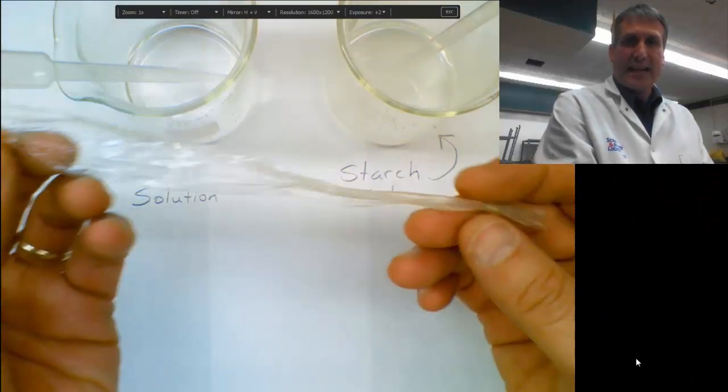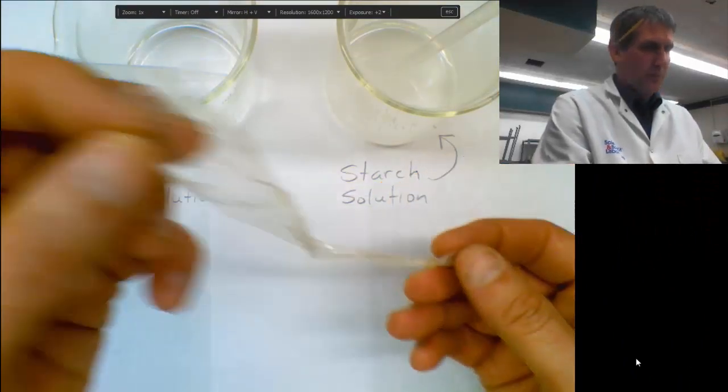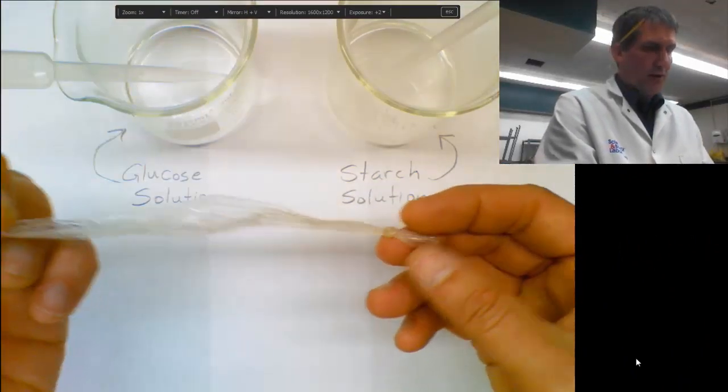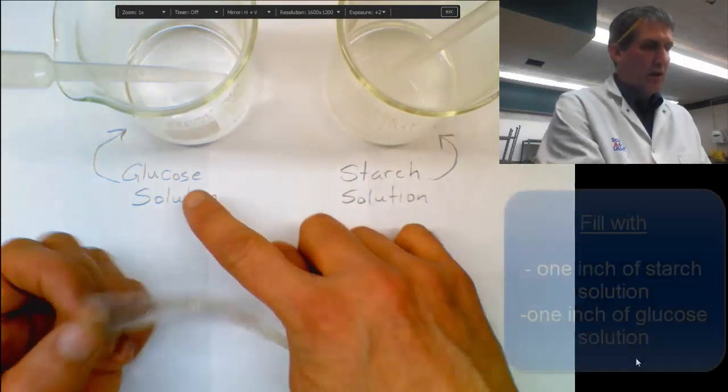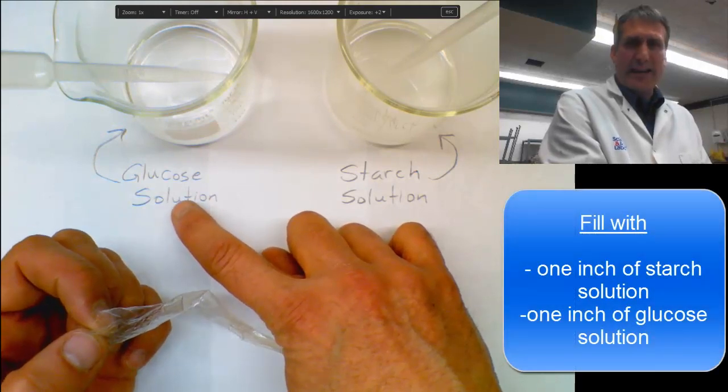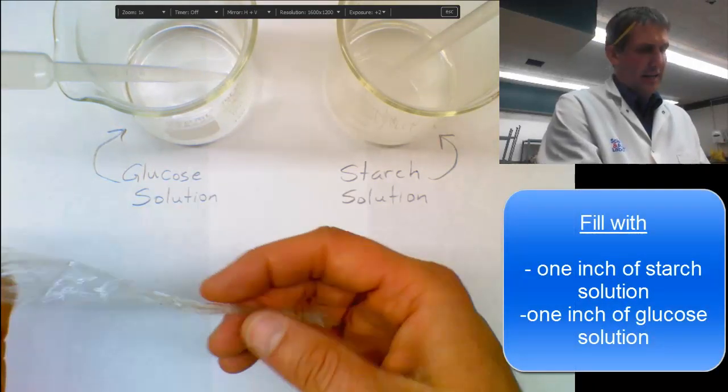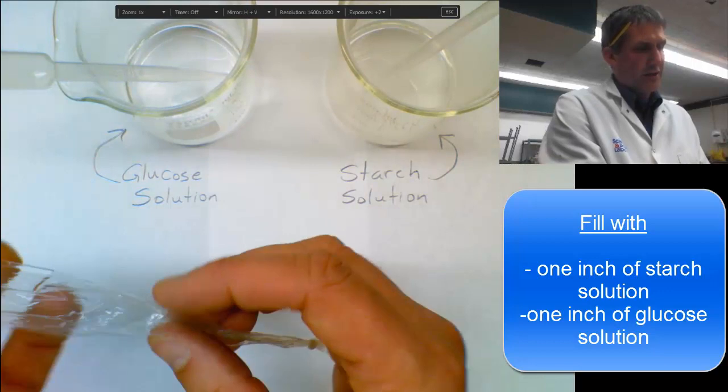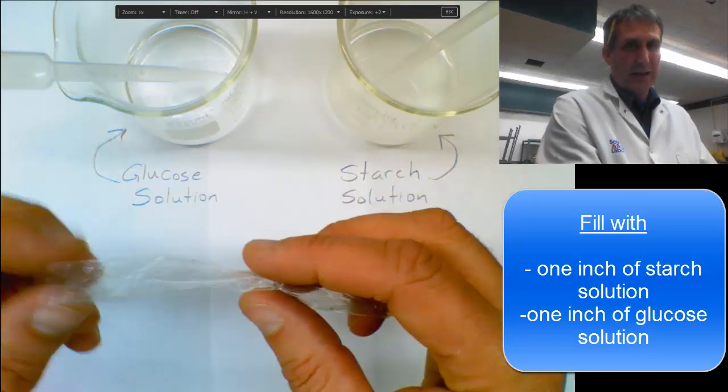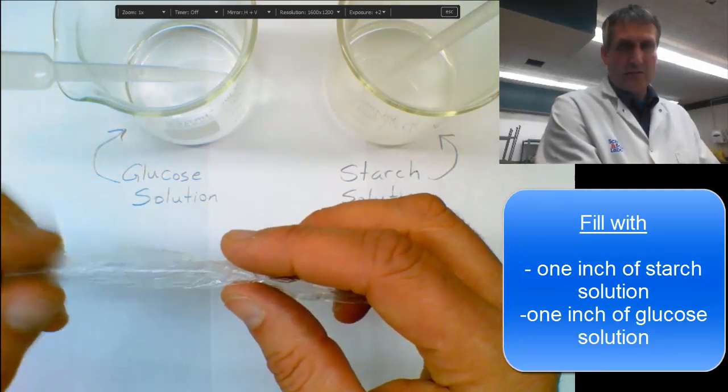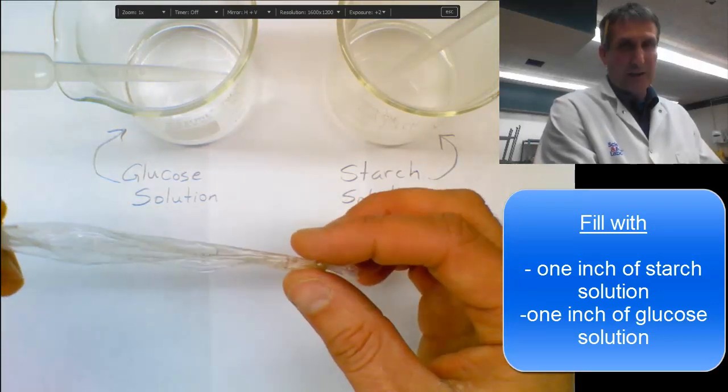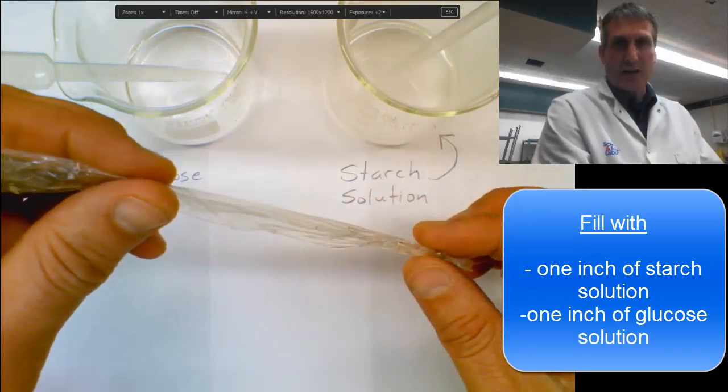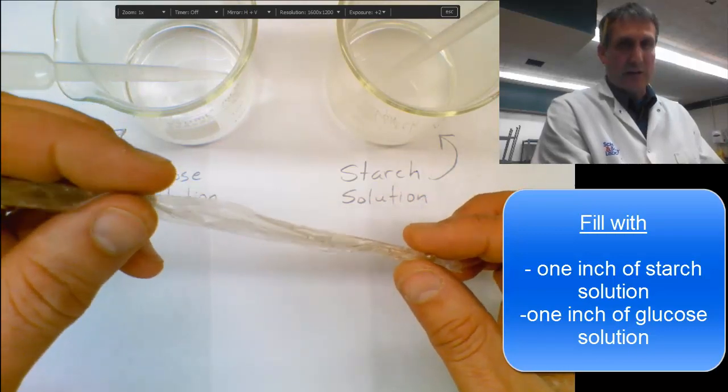So in this next part, we have our dialysis tubing. We've put it under the water and we've tied off one end and we have one end open. Now we're going to fill about an inch of glucose solution in here and an inch of starch solution. And you want to leave a good inch and a half at the other end so you can tie off the other end. So you don't want to fill it too much or else you're not going to be able to tie off the other end.